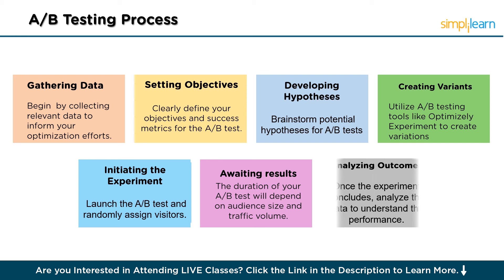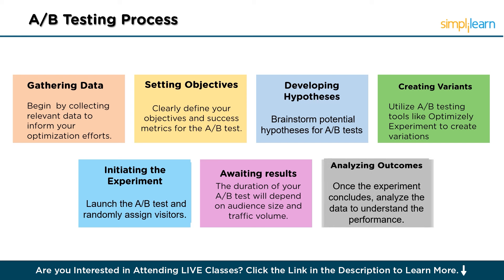The last step of the process is analyzing outcomes. Once the experiment concludes, analyze the data to understand the performance differences between the original and modified versions of your website or app. Confirm if the results are statistically significant and assess the impact of the changes on your objectives. This analysis provides valuable insights that inform future optimization efforts and helps you make data-driven decisions about implementing the winning variation.